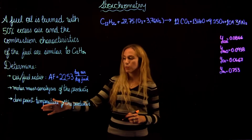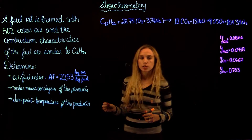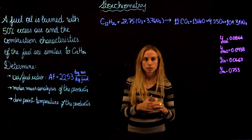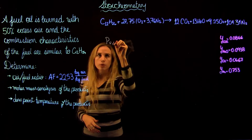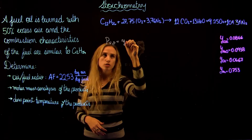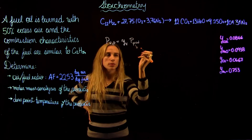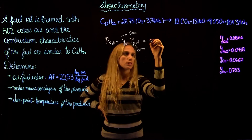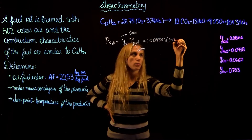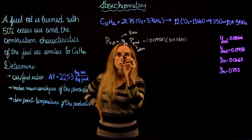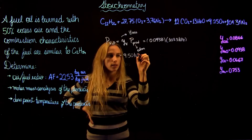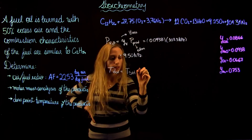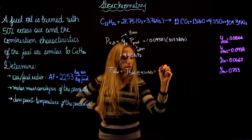Now we find the dew point temperature of the product, which is the temperature at which the water vapor in the products starts to condense as the products cool down. First we find the partial pressure of water vapor: it equals the molar fraction of H2O times the total pressure. At atmospheric pressure: 0.0938 times 101.3 kPa equals 9.50 kPa. The dew point temperature is the saturation temperature at 9.50 kPa, which equals 45°C.